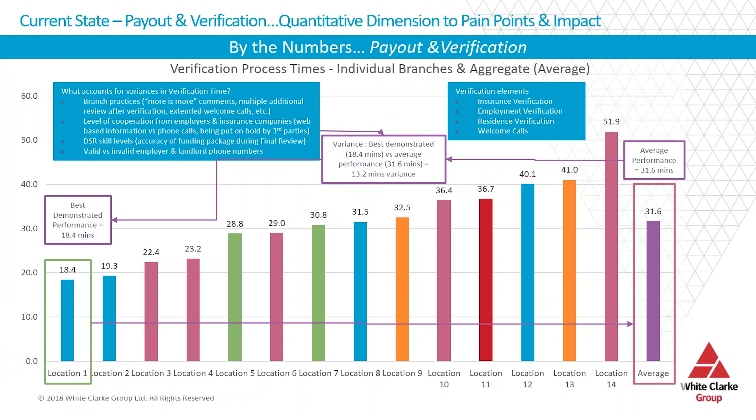If an organization has multiple branch locations providing dealer or customer financing across, let's say, 49 of the 50 continental United States, we would suggest getting process times and pain points from a representative sampling of branches across the United States. As you can clearly see, there is a large delta between the best demonstrated level of performance — the number of minutes to verify contract documentation and trigger a payout to a dealer — versus location 14, which takes close to one hour for the same process, obviously with different constraints and some unofficial processes creeping in.